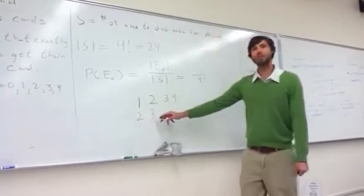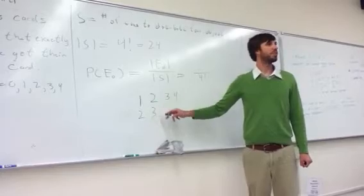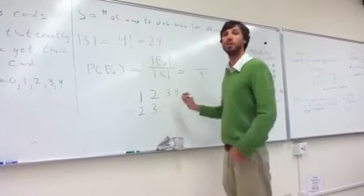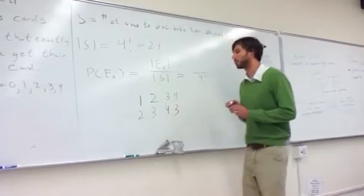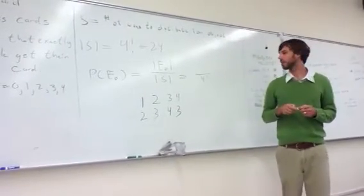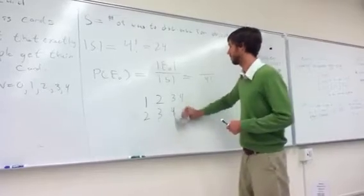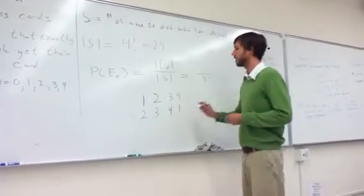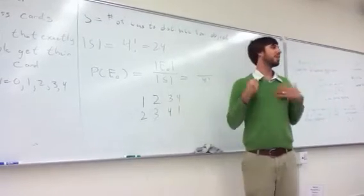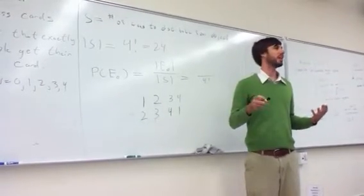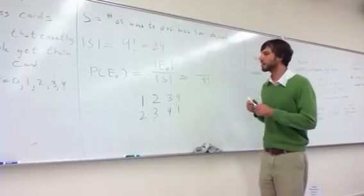But once person two has chosen a business card, then person three, if we don't want them to get their own, has to choose person four's, and person four has to choose person one's. So we can see that once we've determined two people not getting their own, the other two people, there's only one way in which they cannot get their own.